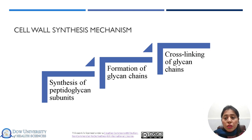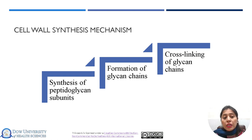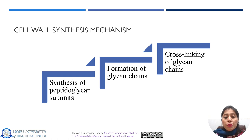Before proceeding to the mechanism of action of penicillin, we will first talk about the cell wall synthesis mechanism. Basically, it is a multi-step procedure. The first step is the synthesis of peptidoglycan subunits. These subunits consist of two sugar derivatives including N-acetylglucosamine and N-acetylmuramic acid, which are joined together by glycosidic bonds. The next step is the formation of the glycan chain. When these subunits are formed, they are linked together to form long glycan chains, which serve as the backbone of the bacterial cell wall. After formation of these glycan chains, they have to be cross-linked by peptide bridges, formed by the action of transpeptidase enzymes.